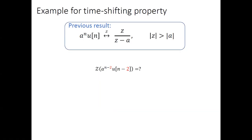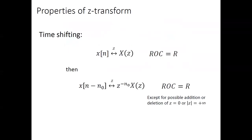We've seen in the last lecture that the discrete time signal A^n·u[n] has Z-transform 1/(1−az⁻¹) with ROC |z|>|A|. What if we shift the signal to the right by two units? So we have A^(n−2)·u[n−2]. We can apply the time-shift property to calculate the Z-transform. Try to write both the Z-transform expression and the ROC — the hint is that the ROC is slightly different from the original.